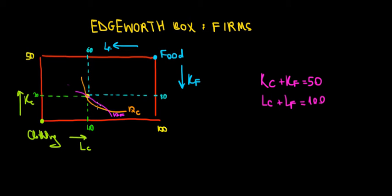What does the ISO quant show us? It shows us the combinations of capital and labor for a given amount of production. The slope tangent to it is going to show us how much capital we're willing to exchange for labor for the same amount of production while keeping the same production level.